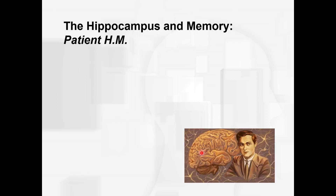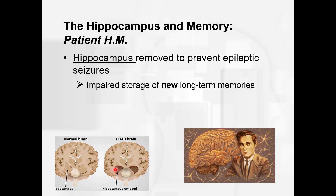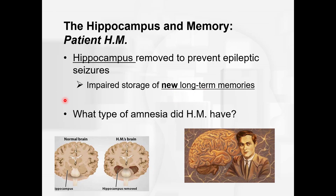HM — we talked a little bit about him previously. He basically taught us most of what we know about memory in modern times. He had his hippocampus removed to prevent epileptic seizures. This is showing you where the hippocampus would be in a normal brain and what HM's brain looked like. When he woke up from surgery it seemed like everything was great, but he had this impaired storage of new long-term memories.